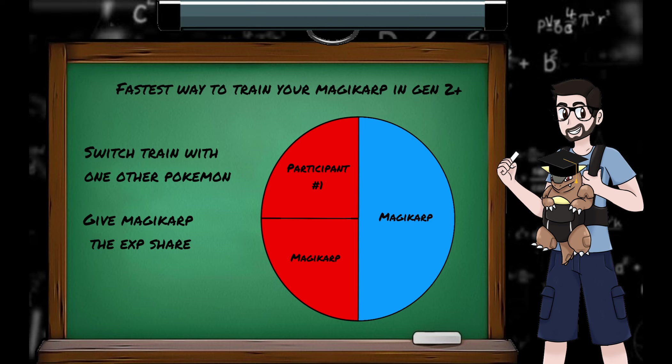And for generations 2 onwards, the fastest way would be to do the same thing as generation 1, switch training with one other Pokemon, except also give your Magikarp the XP share to hold. That way the fish ends up with 75% of the total experience every battle. Ugh, that was a lot. Back to the original equation.